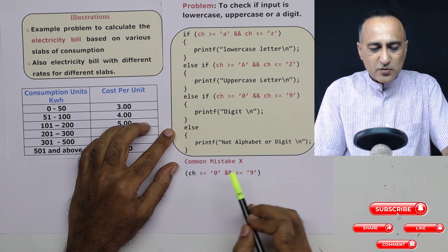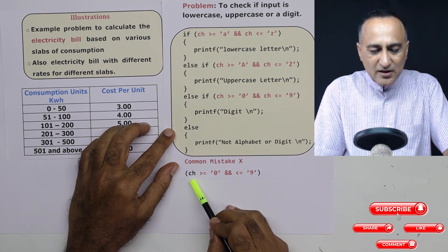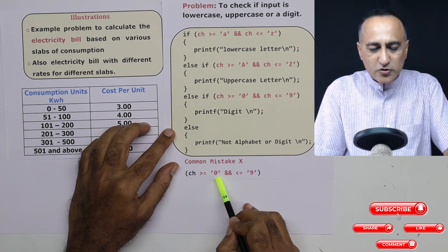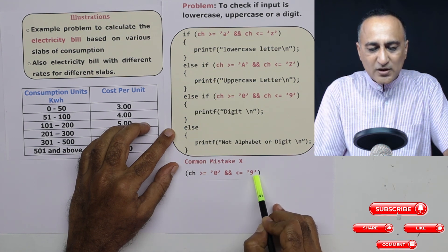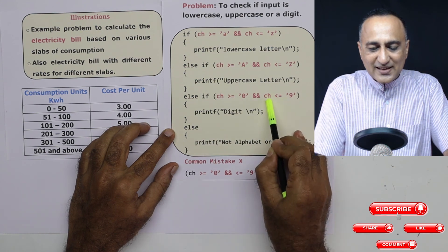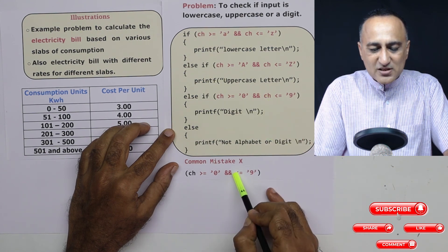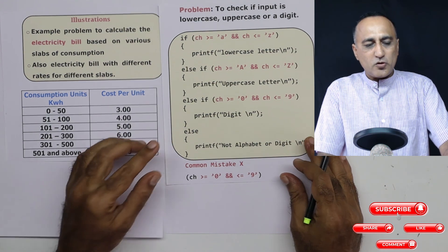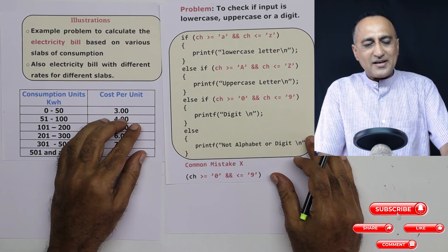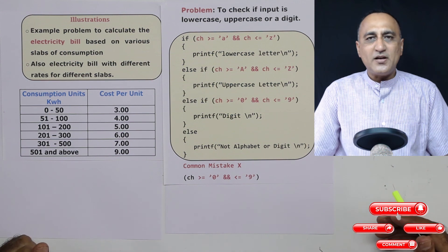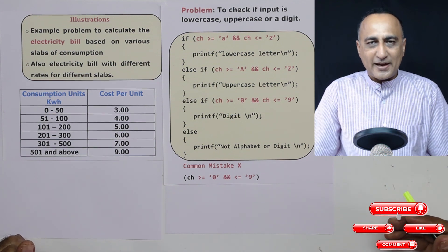A common mistake we tend to make when comparing is this: you cannot say if character >= 0 and <= 9 without specifying the variable on both sides — the CH must appear in both comparisons. If you miss the CH, you will get a compile-time syntax error. You will get more clarity on all of these statements when we go ahead and solve a number of examples live.